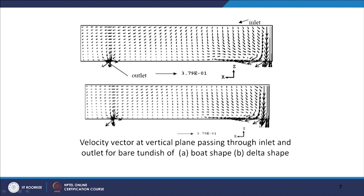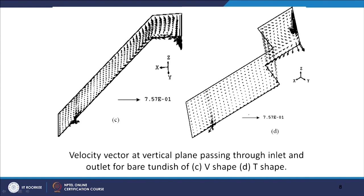You can also view velocity vectors on the vertical planes passing through the inlet and outlet. For the board shape, delta shape, V-shape, and T-shape, you can view the velocity vectors on those vertical planes on which the inlet and outlet are situated. That way you can have these velocity vectors for all four tundish shapes.